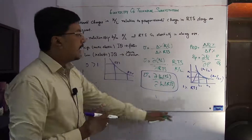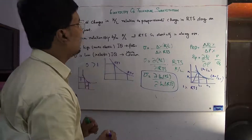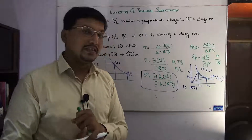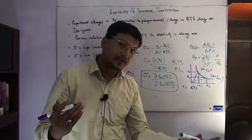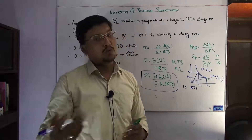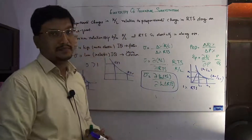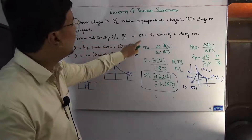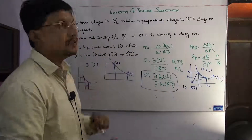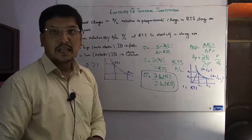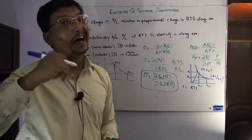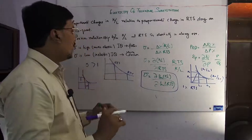There is a positive relationship between RTS and the capital-labor ratio — they move in the same direction, which is why the answer is always positive. If the RTS increases, then the capital-labor ratio will also increase. If the RTS decreases, the capital-labor ratio will also decrease. This is the relationship.